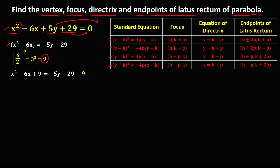Now we can apply factoring to the x squared expression. For factoring: x squared is x times x. Since the sign of the middle term is minus, this is also minus. And 9 is 3 times 3. So we have the quantity (x minus 3) to the power 2. On the right side, we simplify: negative 29 plus 9 gives negative 20.